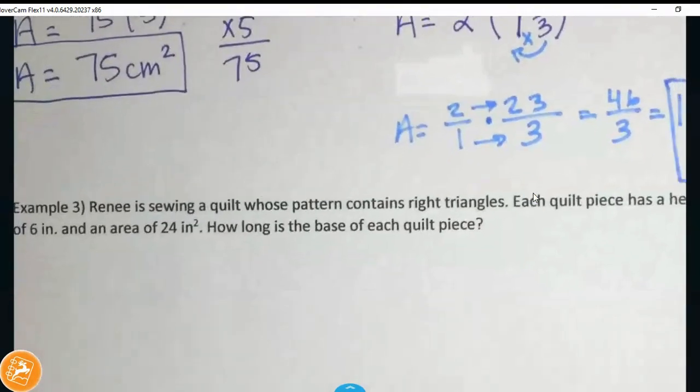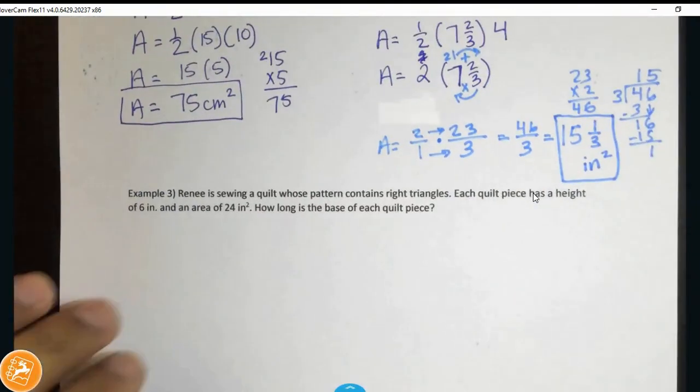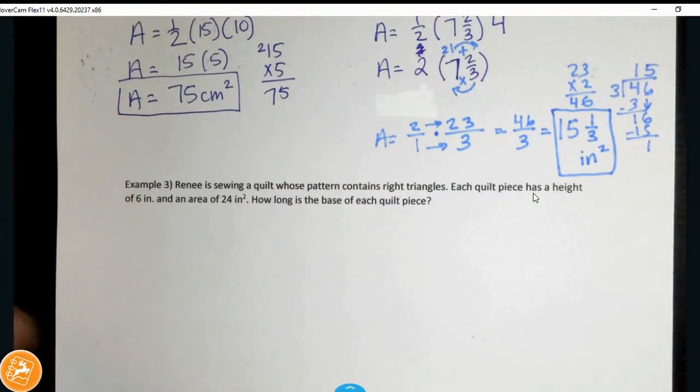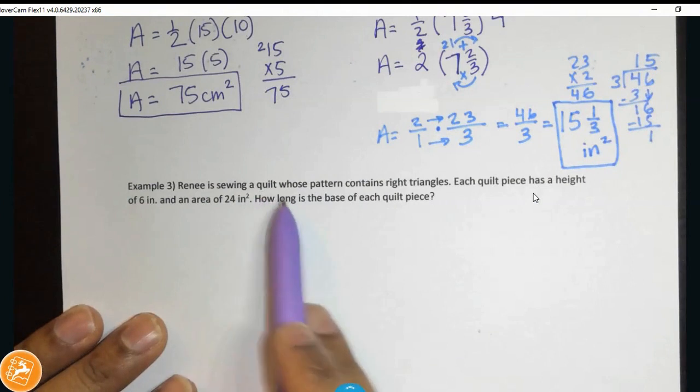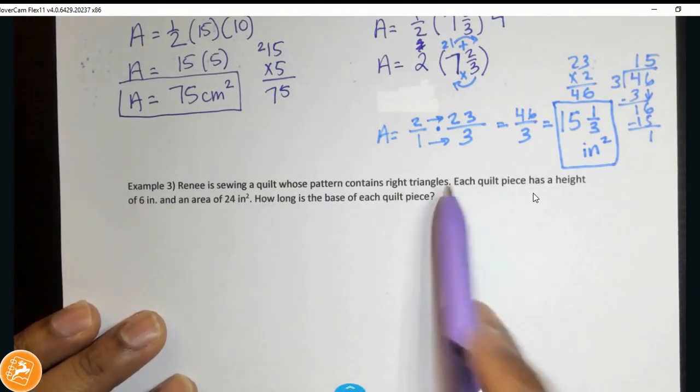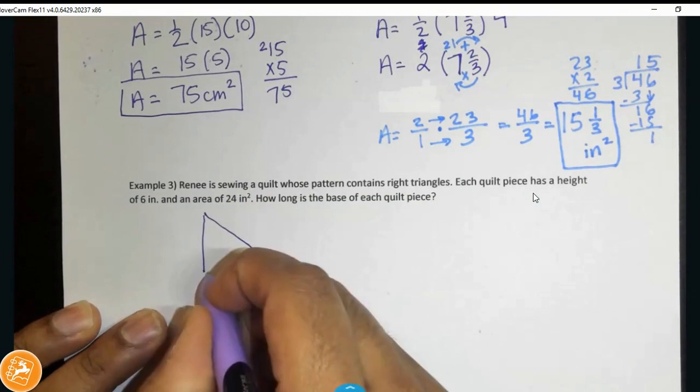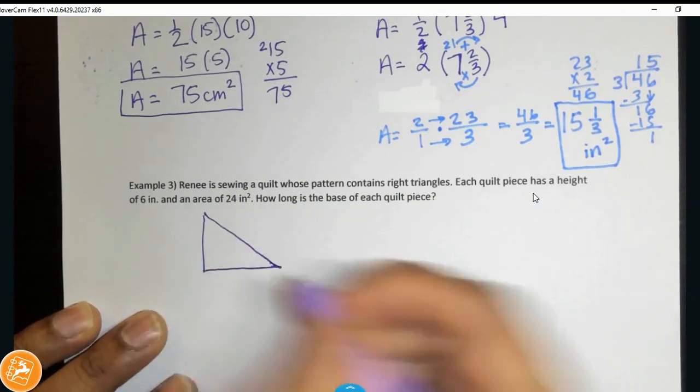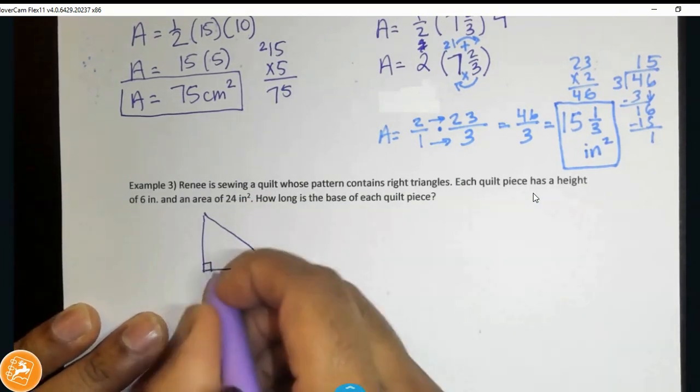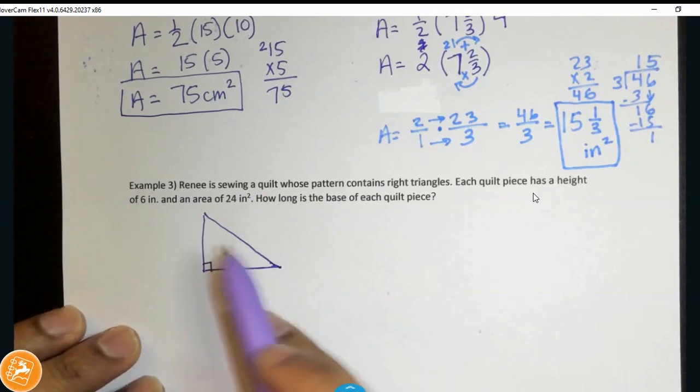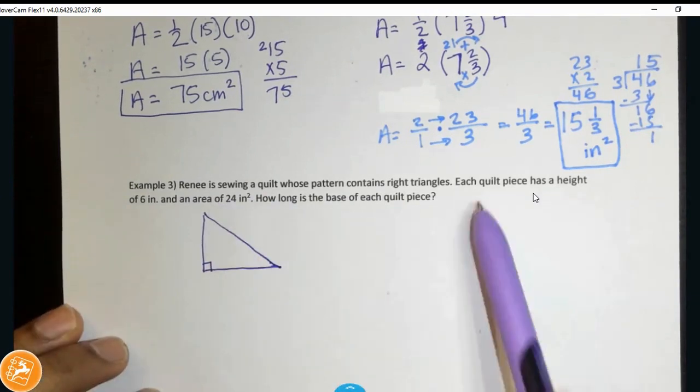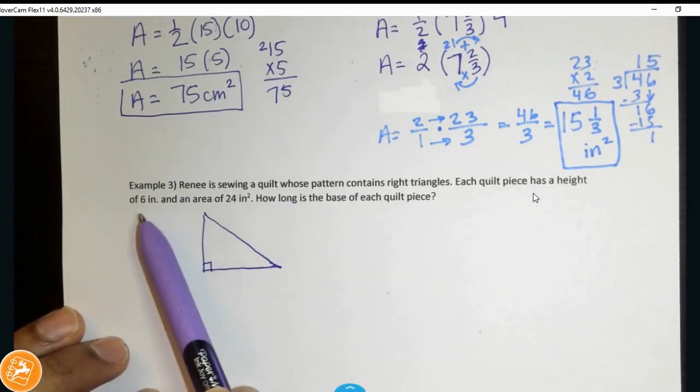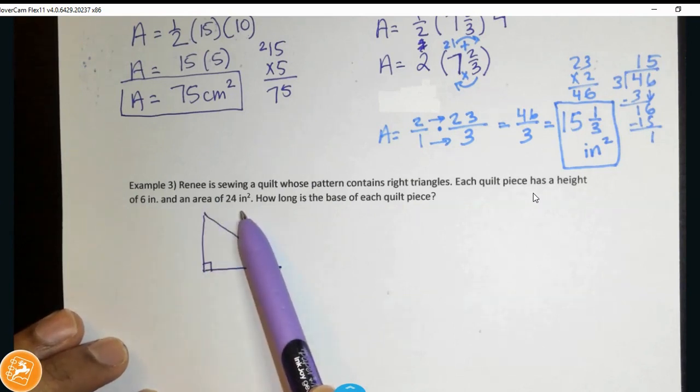Now, we have some problems where they'll give us some of the information, but then we need to find out what's missing. So, for example, Renee is sewing a quilt whose pattern contains right triangles. Now, a right triangle looks just like this. It has a right angle inside of it. It's not perfect, but we'll deal with it.